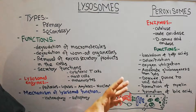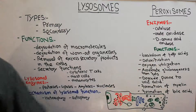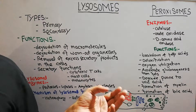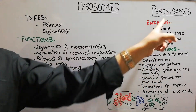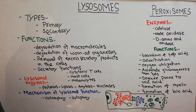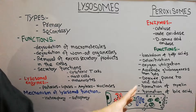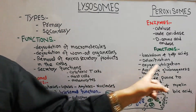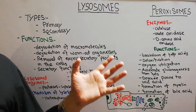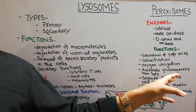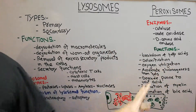Detoxification is another important function: if someone is taking a lot of alcohol, or other dangerous substances like hydrogen peroxide, they are detoxified by the peroxisomes. Oxygen utilization is also an important function — oxygen comes through the lungs into the blood and into the cell, and peroxisomes utilize some portions of it. Peroxisomes also help in accelerating gluconeogenesis from fats — that is, the formation of glucose from fats and oils, a process accelerated by peroxisomes.